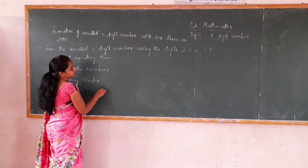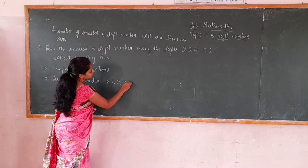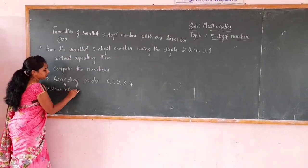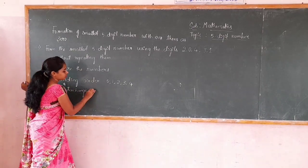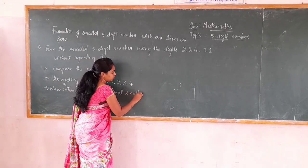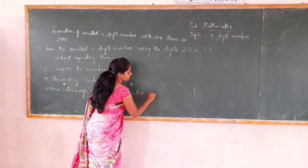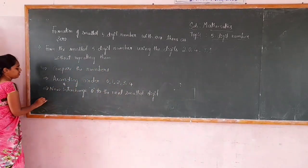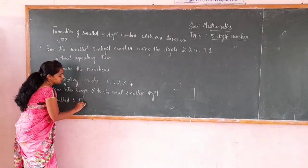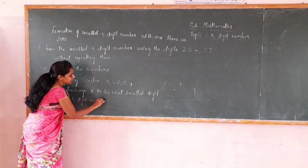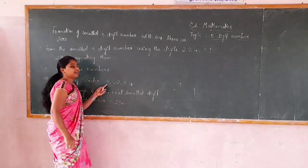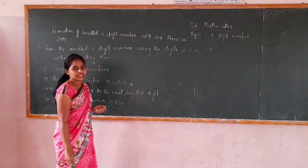To form the smallest 5-digit number, we compare the numbers and write them in ascending order: 0, 1, 2, 3, 4. Now, interchange 0 to the position next to the smallest digit. Finally, we get the smallest 5-digit number 10,234. Here, 0 cannot take the ten-thousands place, because it would become a 4-digit number.